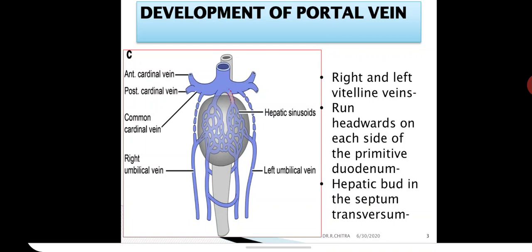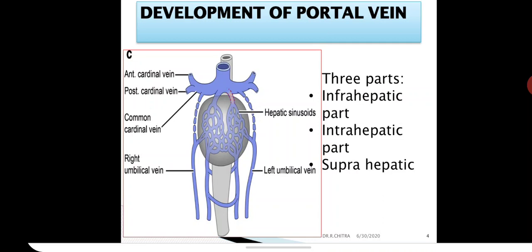Now the hepatic bud has started developing in the septum transversum. By this, the vitelline veins are divided into three parts by the liver development. The liver separates three parts: the infra-hepatic part, the intra-hepatic part, and the supra-hepatic part. Of these, the infra-hepatic part is important for the development of the portal vein, as the portal vein enters the liver and is related to the duodenum and pancreas.